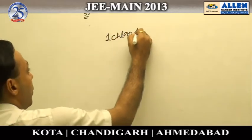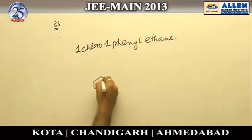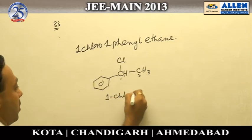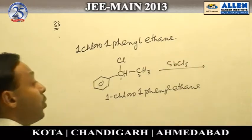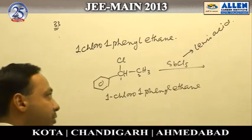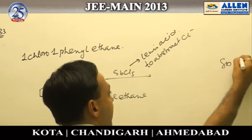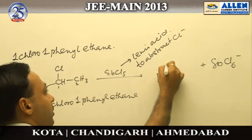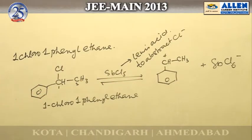The compound given is 1-chloro-1-phenylethane. When it reacts with SbCl5, SbCl5 acts as a Lewis acid and its purpose is to abstract Cl minus. During this process, SbCl6 minus is formed and a reaction intermediate — our carbocation — is formed. It is a short reversible process.